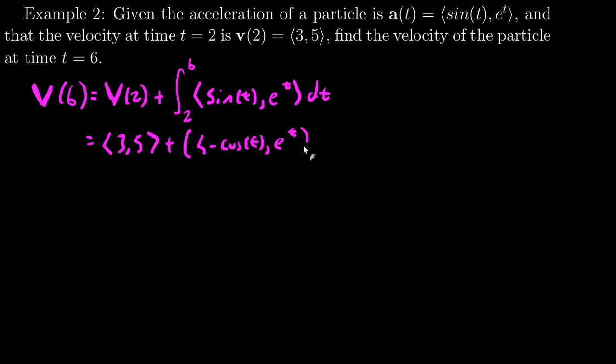So I have 3, 5, plus... I put 6 in and get negative cosine of 6, e to the 6. I put 2 in and I get negative cosine of 2, e squared.